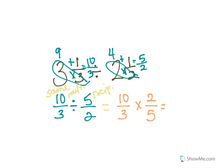Now I can multiply it. And remember, these expressions, ten-thirds divided by five-halves, is the same thing as ten-thirds times two-fifths. They're equal to each other.